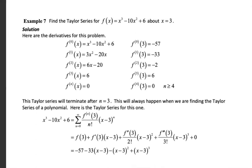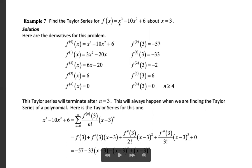Next problem: find the Taylor series for f(x) = x³ - 10x² + 6 about x = 3. To find f(3), substitute x = 3: 3³ - 10·3² + 6 = 27 - 90 + 6 = -57. So f(3) = -57.